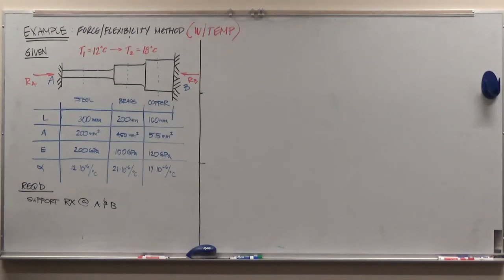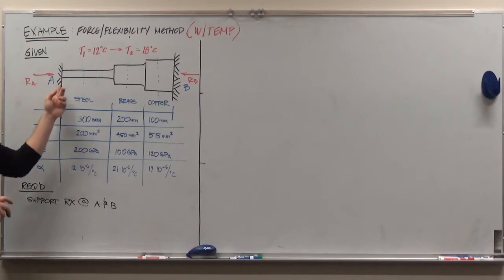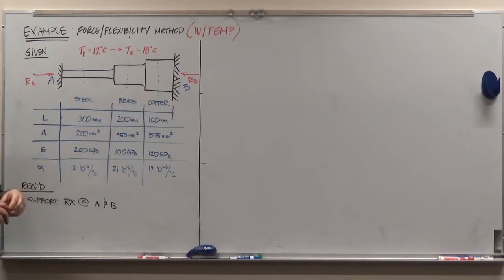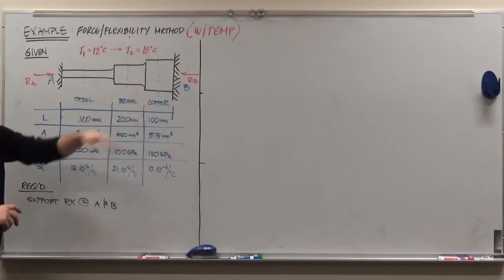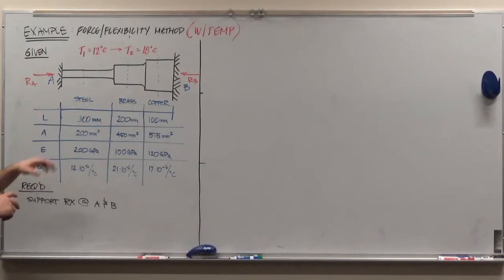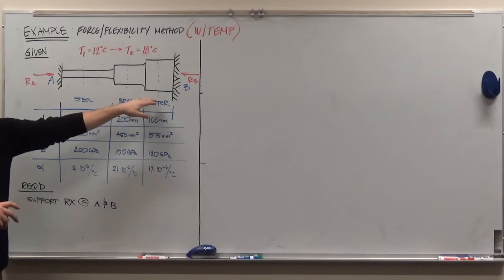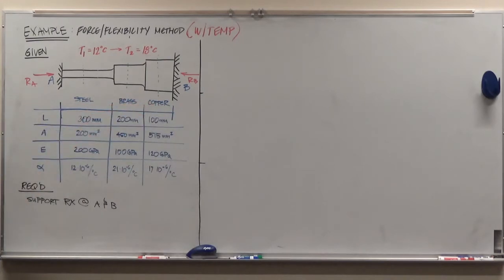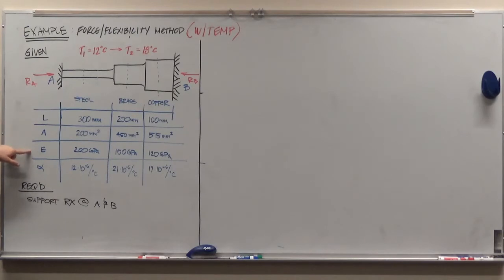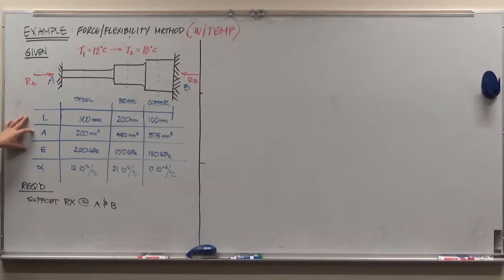To introduce the problem, all the given information is that we have an assembly fixed between points A and B. We have three different distinct materials and members: a steel member, a brass member, and a copper member. Each of those has a varying value for the length, the cross-sectional area, and the modulus of elasticity — so all three different components of stiffness are varying.